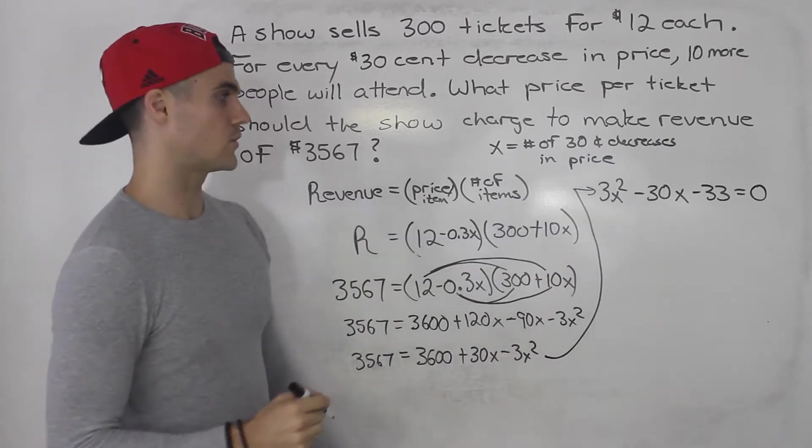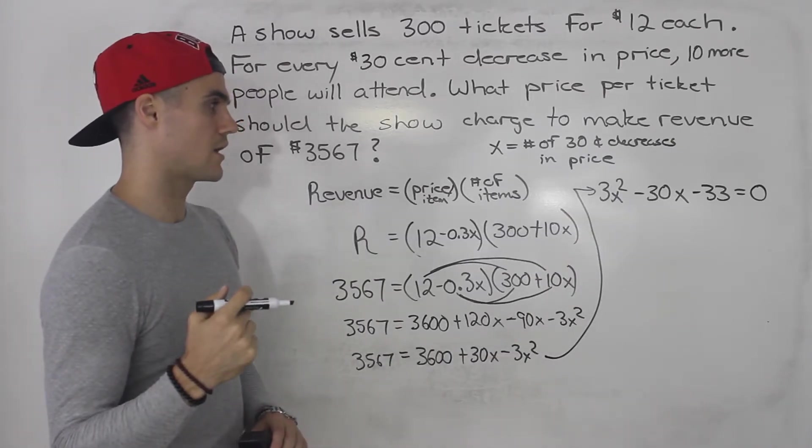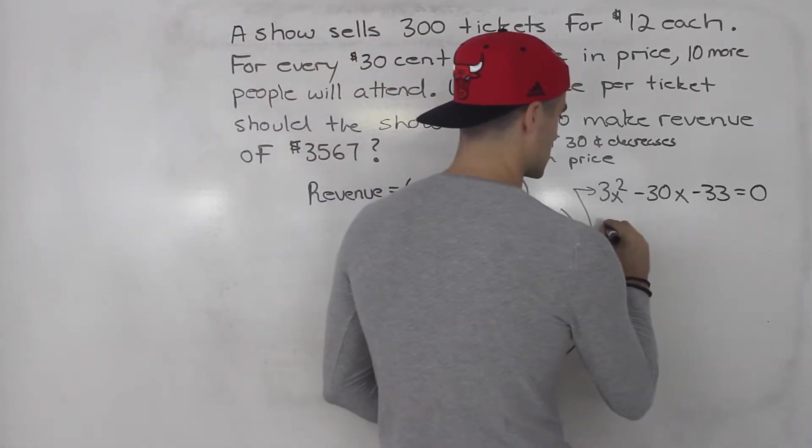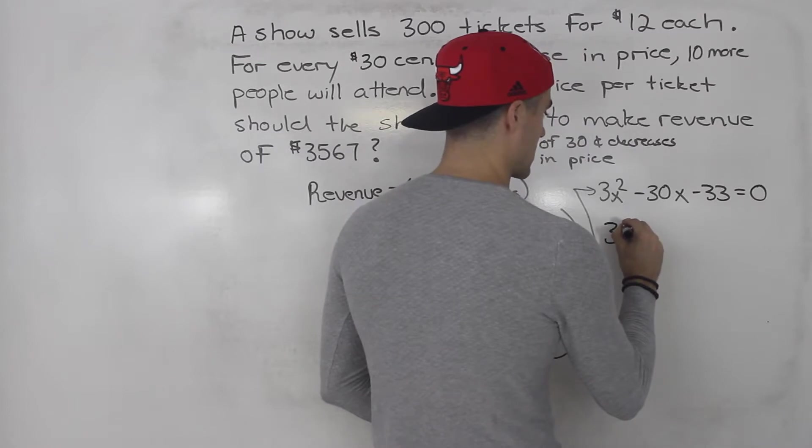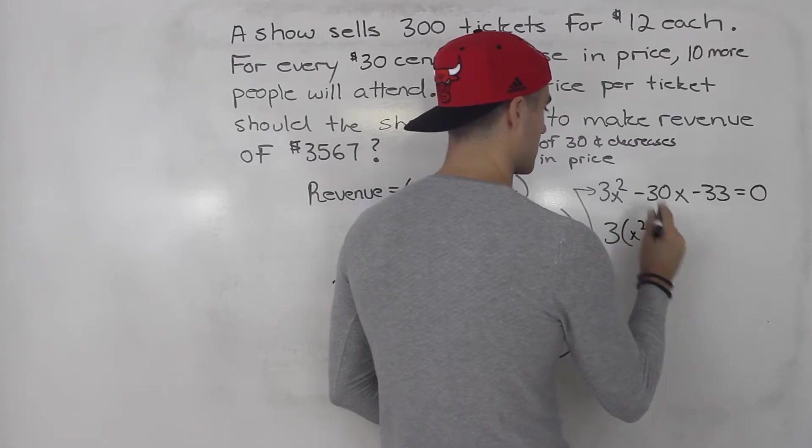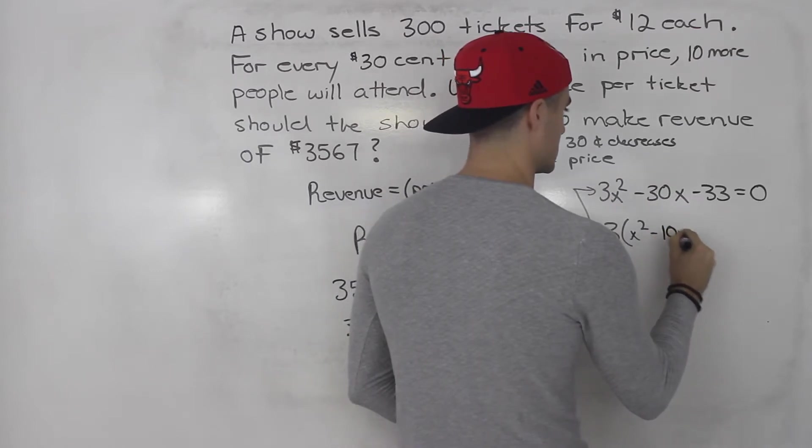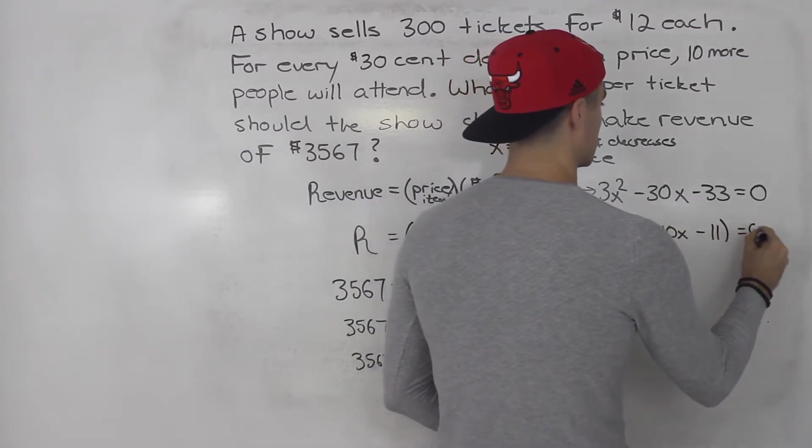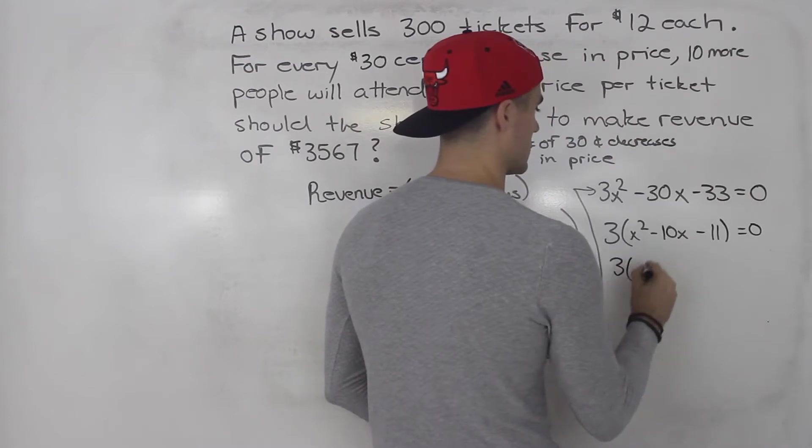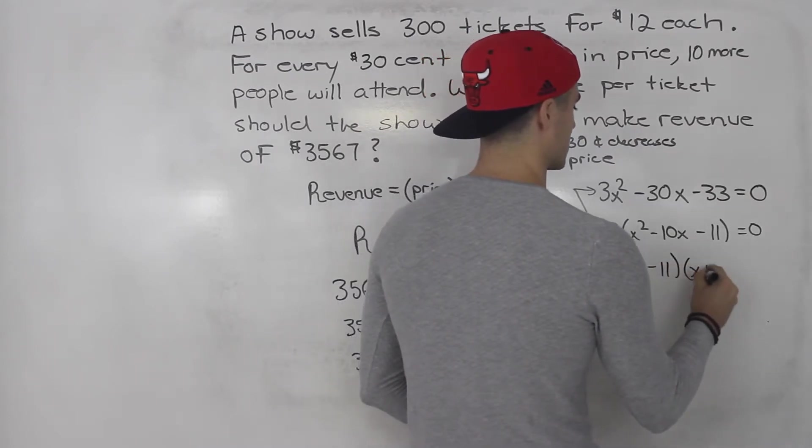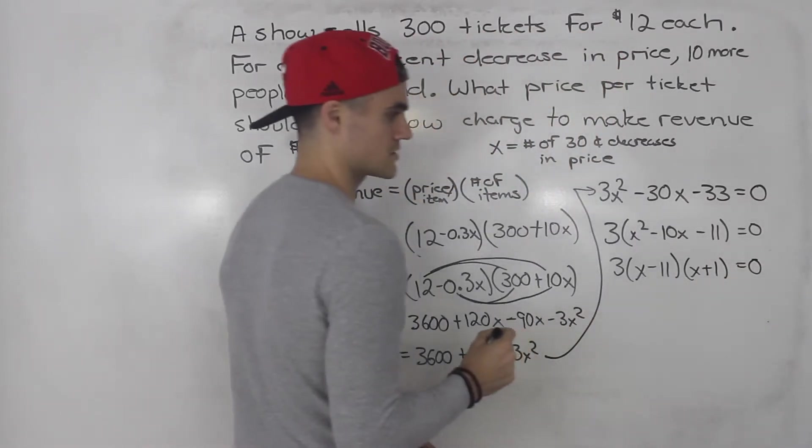So we have a quadratic equation here. You can throw that into the quadratic formula if you like. I think this is actually going to factor smoothly. So let's take out a 3. So we would have x squared minus 10x minus 11, equals zero. So 3 times x minus 11 times x plus 1 equals zero.